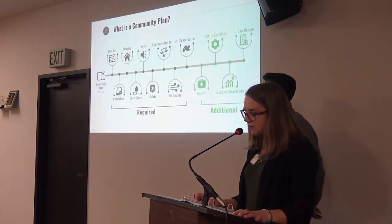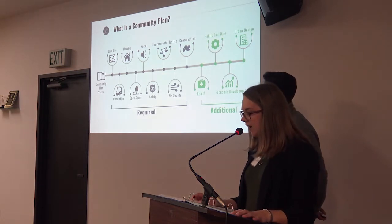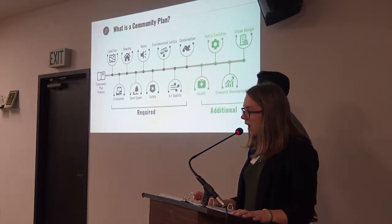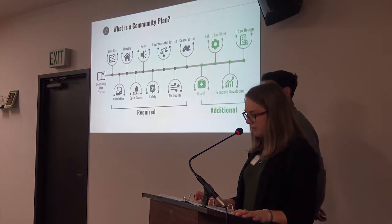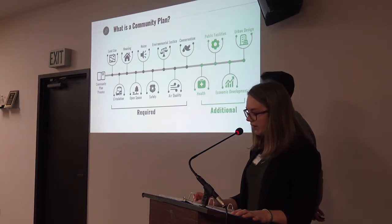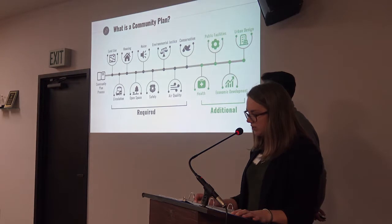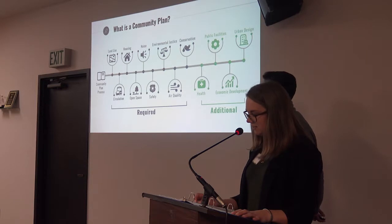Parallel to the county of San Luis Obispo's general plan, the community plan is a blueprint that guides the future development of the community. However, because Oceano is unincorporated within the county, the plan is referred to as a community plan. Per California state law, every community is required to include the following elements: land use, circulation, housing, open space, noise, safety, environmental justice, air quality, and conservation.